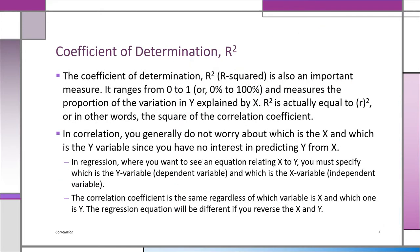If we square the correlation coefficient R, we get R-squared — the coefficient of determination. Remember, R can range from negative one to positive one, but when you square it, you only have a positive number, and in fact you have a percentage. The definition of R-squared is the proportion of the variation in Y explained by X. With correlation alone, we're not really interested in which variable is Y and which is X — that becomes much more important in regression.